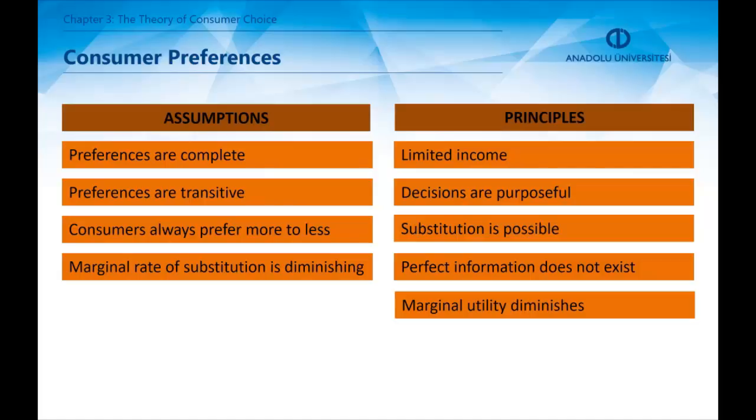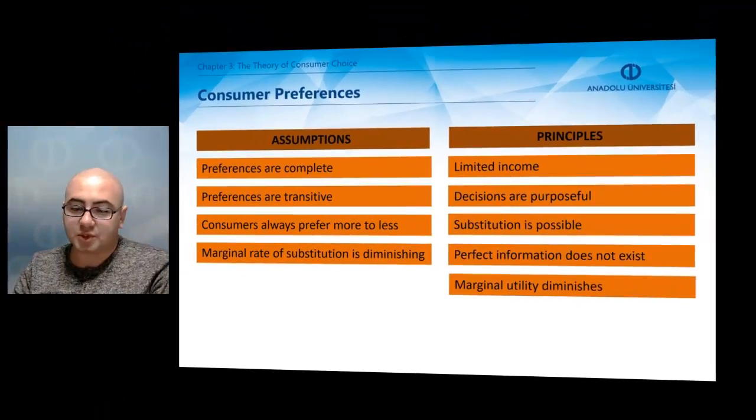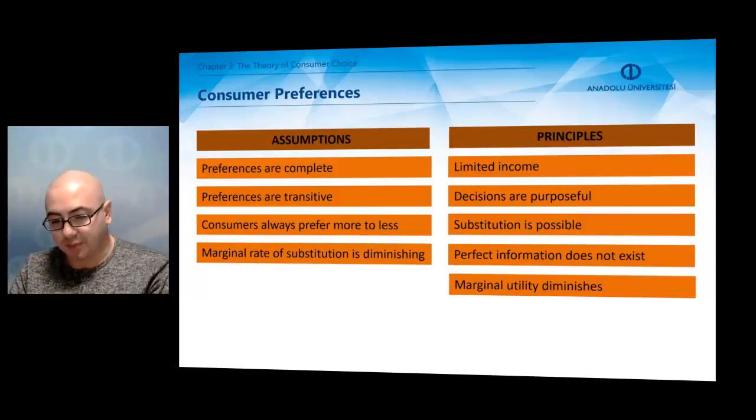Second, preferences are transitive, which means a consumer can substitute a good for another. Third, consumers always prefer more to less, which means consumers are better off using more of a product. And the fourth one, marginal rate of substitution is diminishing, which means when consumers increase their choice of the other product, they are going to have to give up more of the first product.